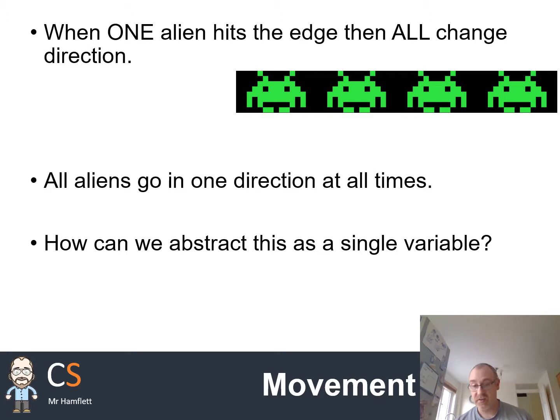When one alien hits the edge of the screen, they all reverse direction. And when they reverse direction, they'll move down by one row.